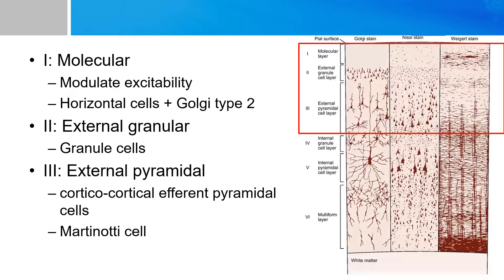In layer three and five, the external and internal pyramidal layers both contains a cell type called Martinotti cells. These are basically small multipolar neurons that sends their axons up to cortical layer one, the molecular layer. And if you remember that molecular layer is responsible for modulating excitability, the Martinotti cells function is basically to send signal up to layer one and serve as a cortical dampening mechanism or function.